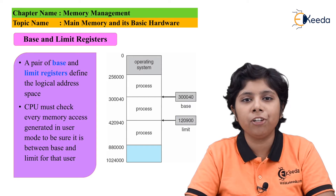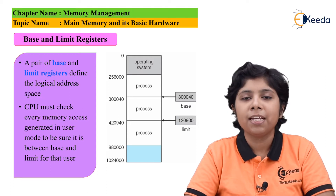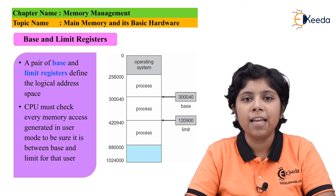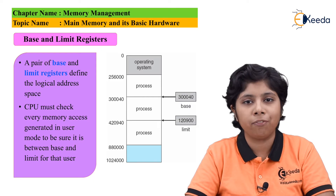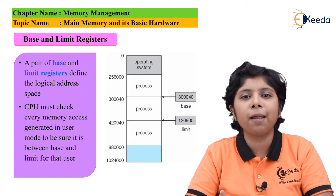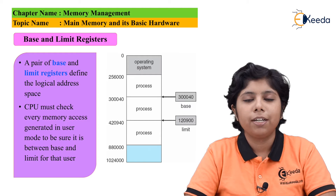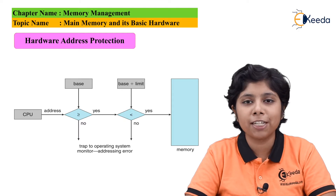This procedure should be implemented by hardware only, because the operating system does not intervene between the CPU and its memory access. When the CPU accesses register contents and base register contents, neither hardware nor software can intervene in that access. Therefore, the operating system must prevent user processes from accessing illegal address spaces.